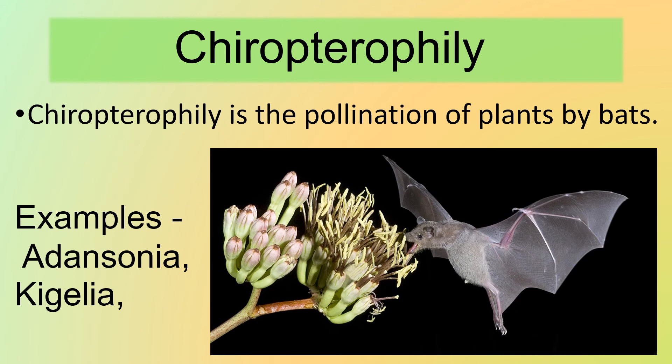Now let's look at chiropterophily. Chiropterophily is the pollination of plants by bats. Examples are Adansonia and Kigelia.